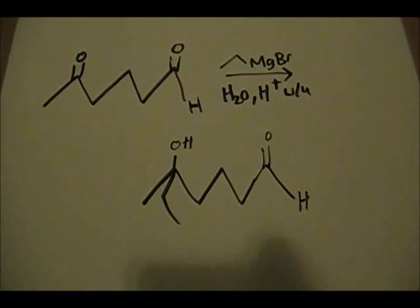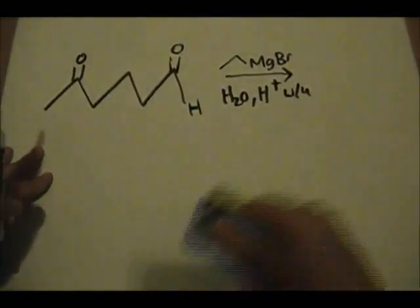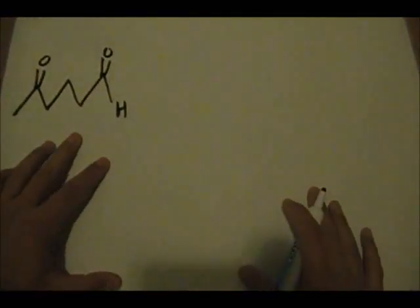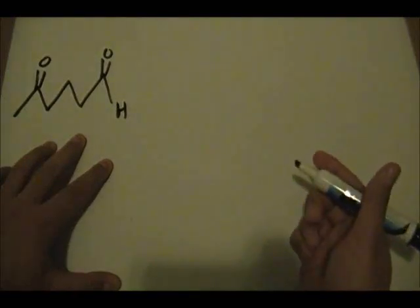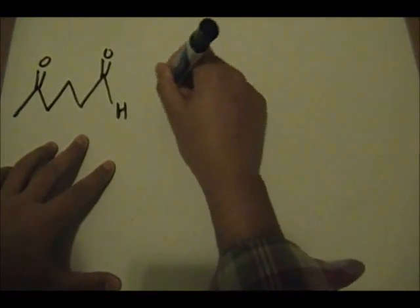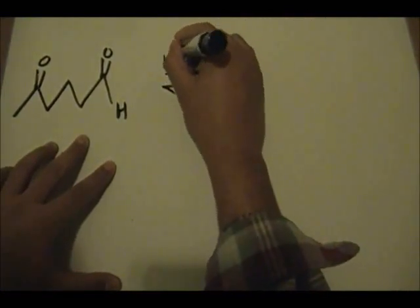We are trying to keep the aldehyde unchanged, so this is where acetals come into the picture. We need to protect the aldehyde, and that is what the acetal does. Starting fresh with our molecule, the first thing we need to do to form our desired product is perform an acetal reaction using H+ catalyst.